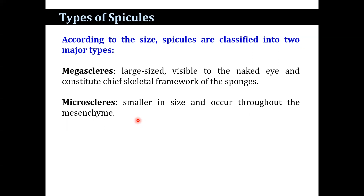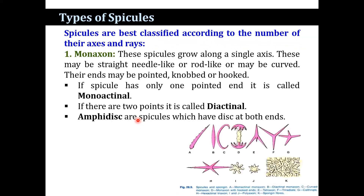Spicules are also classified according to the number of their axes and rays. On that basis, spicules are classified as monaxon, triaxon, tetraxon, polyaxon, sphere, and desma.